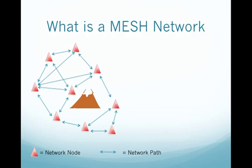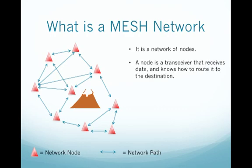Here's a diagram of a mesh network — it's a network of nodes. Each one of those little red triangles represents a node on the network. A node is basically a transceiver or radio. It receives data and knows how to route it to the destination or to a nearby neighbor, and you can see with the little blue arrows there are multiple routes.